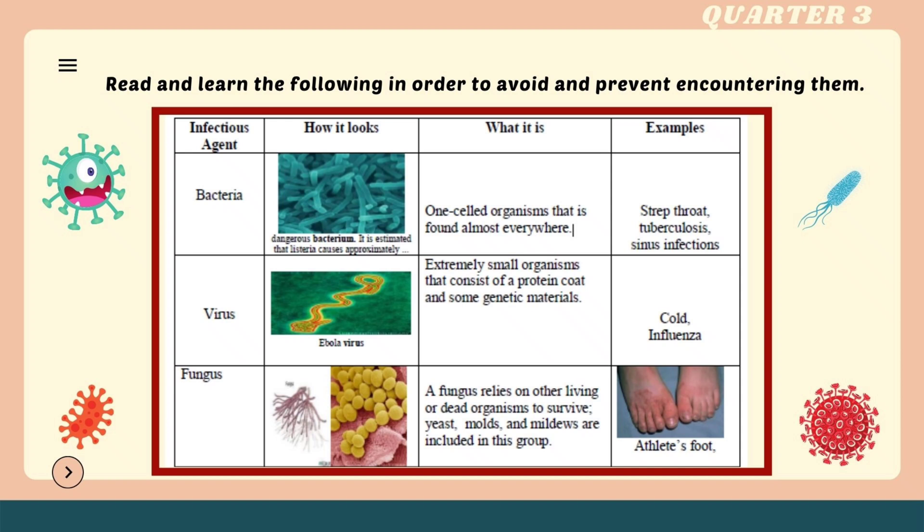Read and learn the following in order to avoid and prevent encountering them. Bacteria are one-celled organisms found almost everywhere. Examples include strep throat, tuberculosis, and sinus infections.